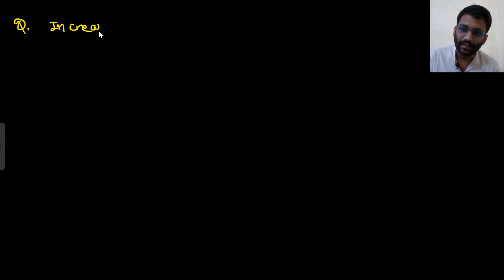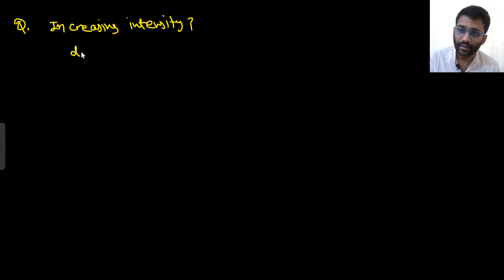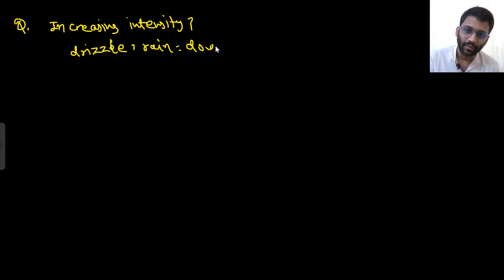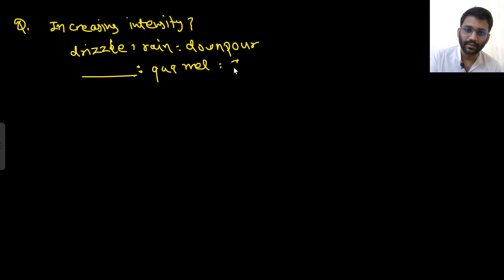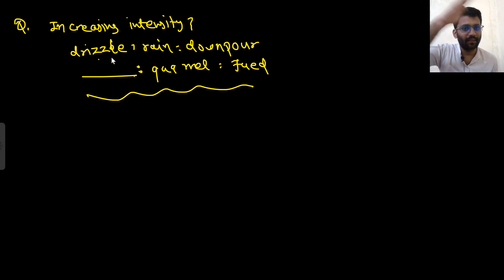There was one more question from verbal aptitude about increasing intensity. The pattern given was: drizzle → rain → downpour. In a similar manner, one option was a blank, then 'car' and 'fuel'. All of these relate to fighting.